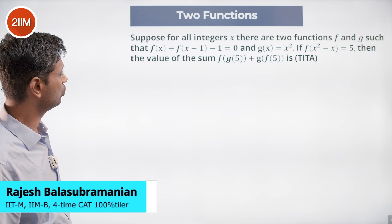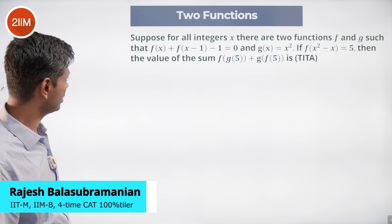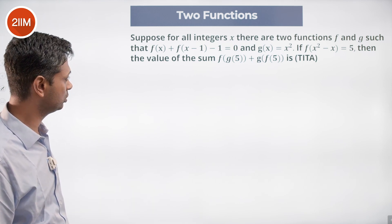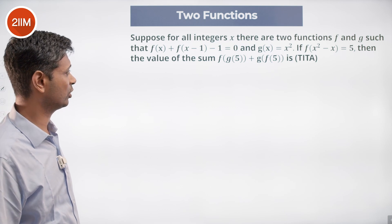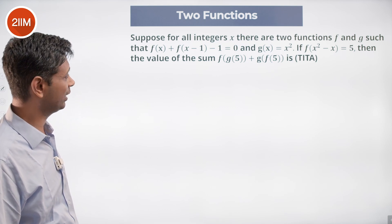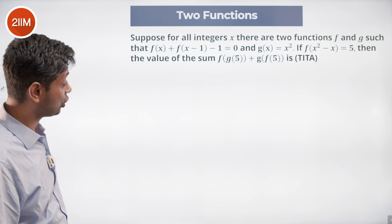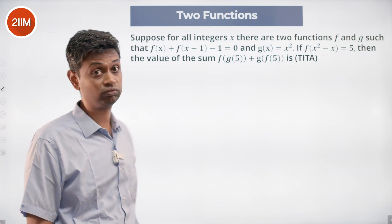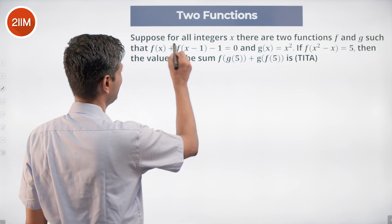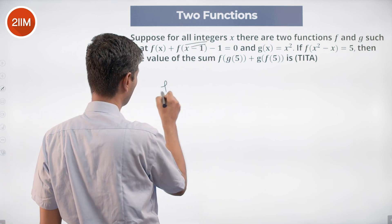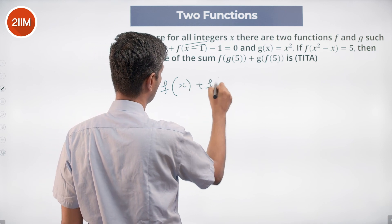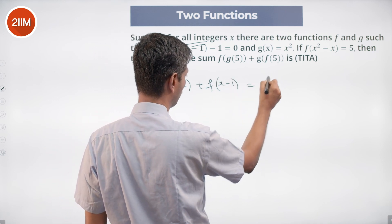Suppose for all integers x there are two functions f and g such that f(x) + f(x-1) = 1, and g(x) = x². If f(x² - x) = 5, find the value of f(g(y)) + g(f(5)). It's a tough question — let's simplify this.